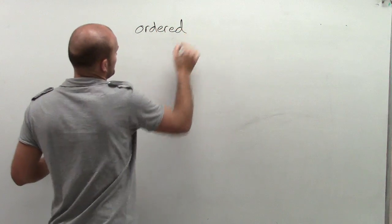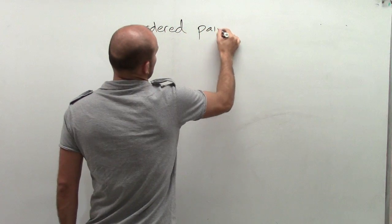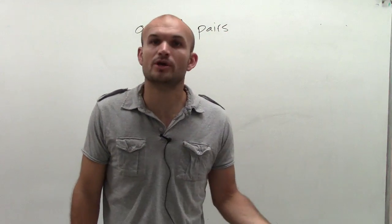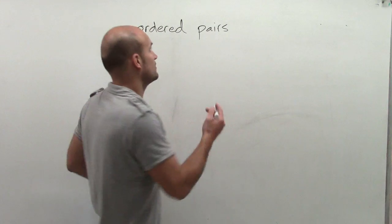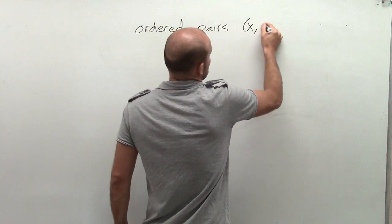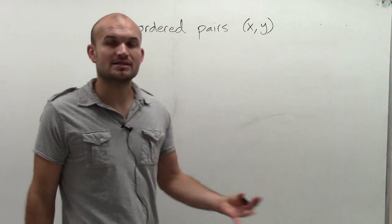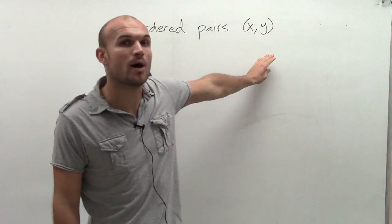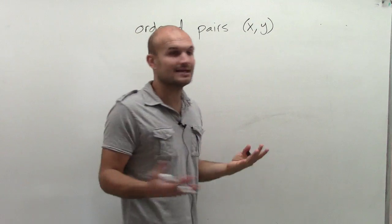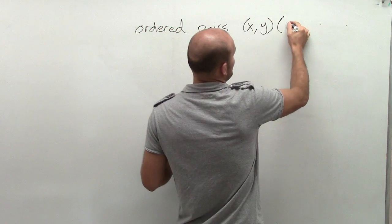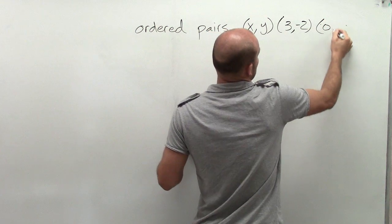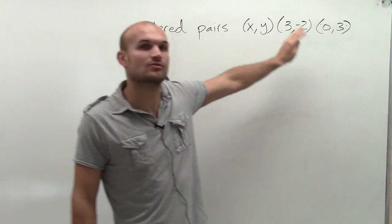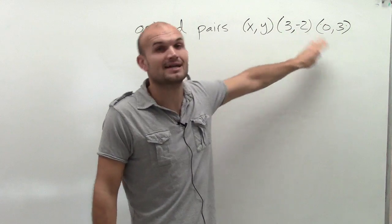The first is ordered pairs. This might be a way that you'd be familiar with when you first started graphing. Remember, when we graph, we graphed coordinate points. And there was a relationship between the coordinate points. You have your x and your y coordinate, and they related to each other on how you would graph them. We could just put in numbers here, and this is a way that there's a relationship between these two points, the x and y coordinate.